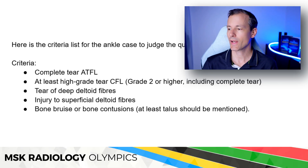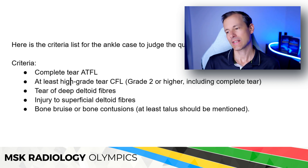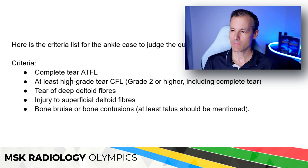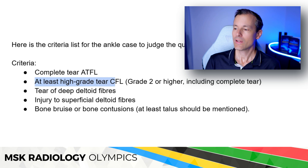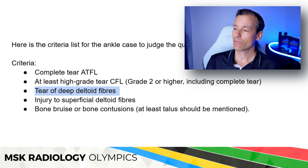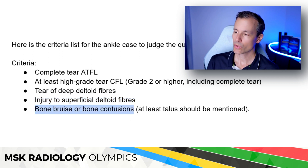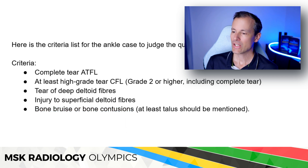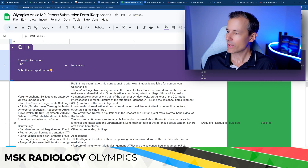Now let's look at the criteria I used to assess reports together with the Gemini algorithm. After the first pass disqualified most reports for missing the periosteal stripping of the flexor retinaculum - which I initially had as a major criteria - I tuned it down. The final criteria were: complete ATFL tear, at least partial CFL tear, at least some form of deep deltoid tear, any injury of the superficial deltoid including periosteal sleeve avulsion, and the bone bruise or impaction fracture of the talar neck. Five criteria needed to qualify.